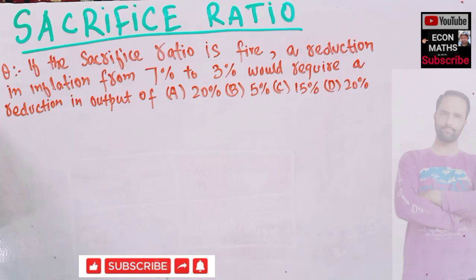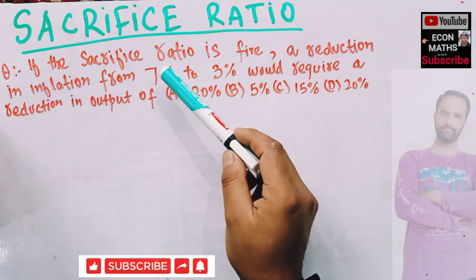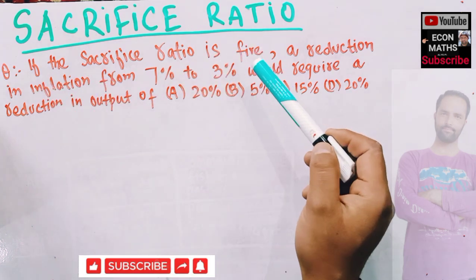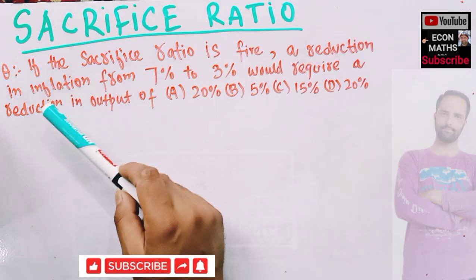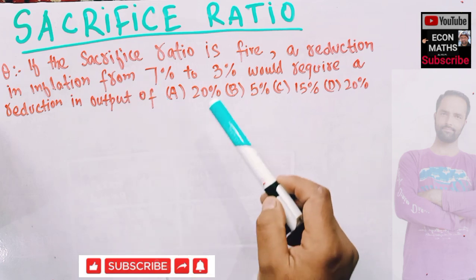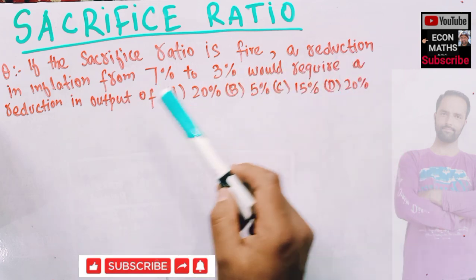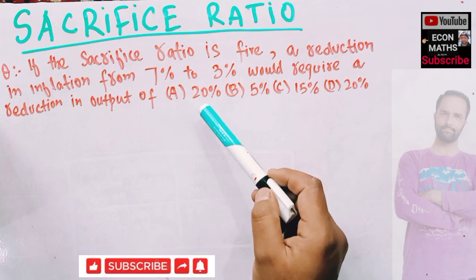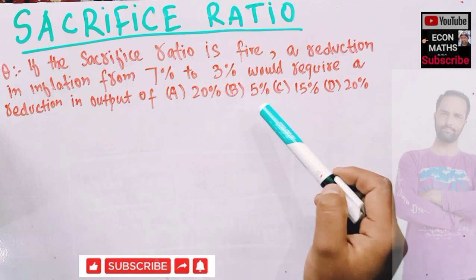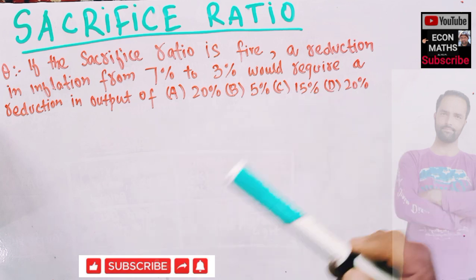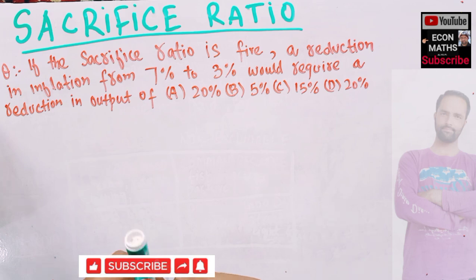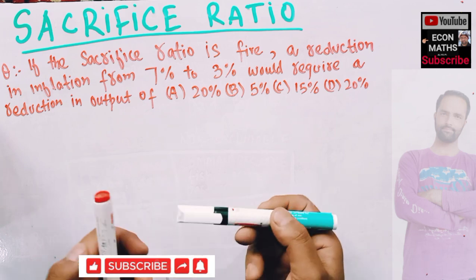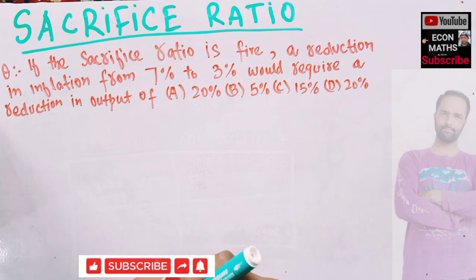Let us solve a question on sacrifice ratio and how to interpret it. The question is: if the sacrifice ratio is 5, a reduction in inflation from 7% to 3% would require a reduction in output of — the options are 20%, 5%, 15%, or 20%.